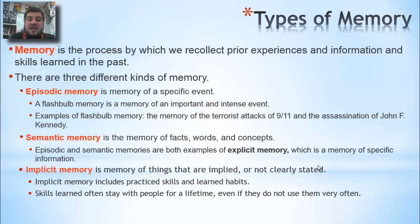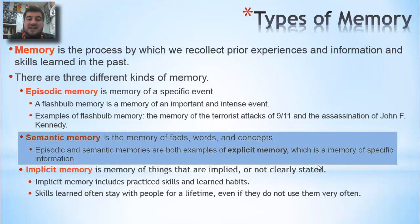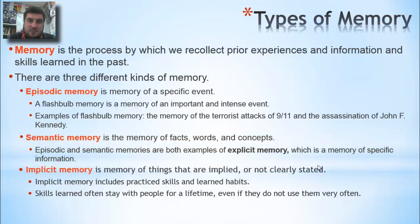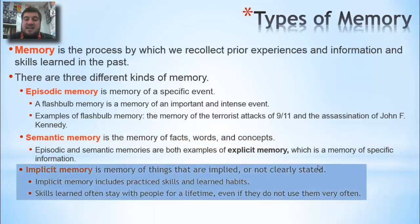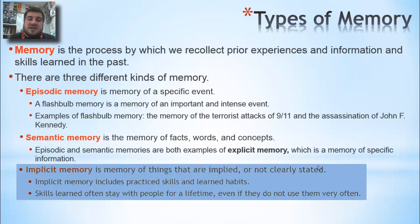Semantic memory is facts, words, and concepts. Episodic and semantic memory are both examples of what is called explicit memory — memory of specific information. Implicit memory is things that are not clearly stated, like skills and learned habits such as brushing your teeth and riding a bike. These stay with you for a lifetime, even if you haven't done them in years.